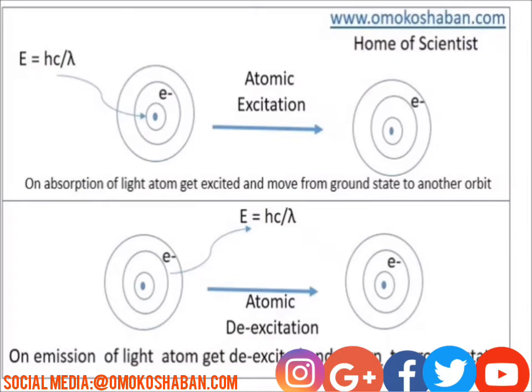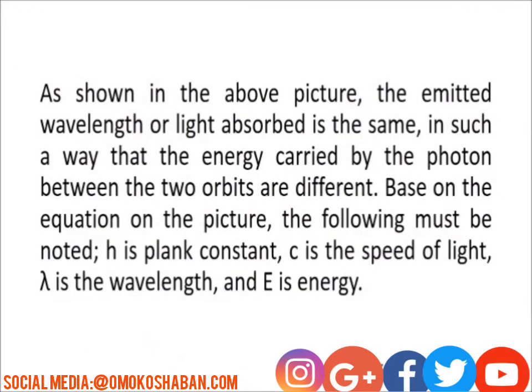As we go, you are going to know the meaning of this formula. As it shows in the above picture, the emitted wavelength or light observed is the same, in such a way that the energy carried by the photon between the two orbits differs based on the equations in the picture. The following must be noted: H is Planck's constant, C stands for the speed of light, lambda is the wavelength, and E is energy.